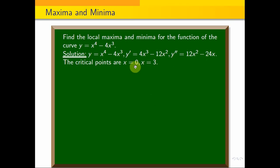So, the first point is 0, apply to the point. So, y'' of 0, when x equals 0, is equal to 12 times 0 squared minus 24 times 0.